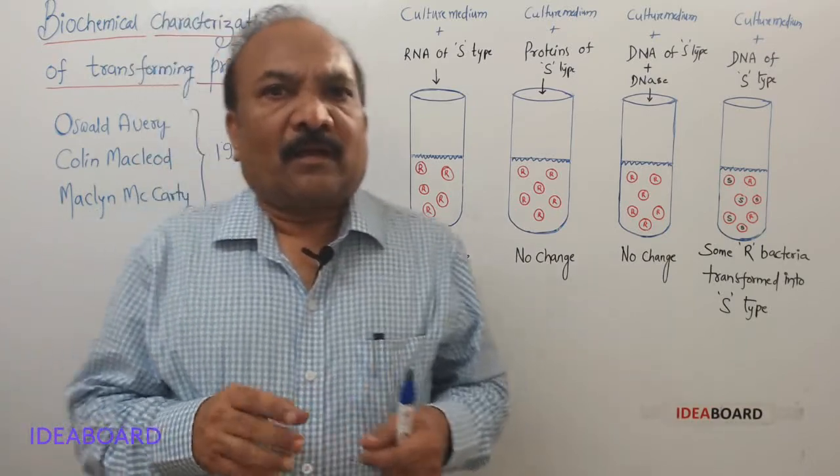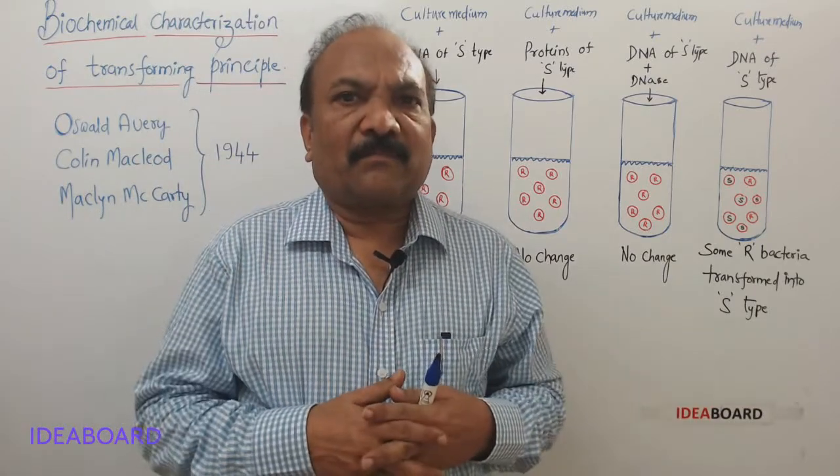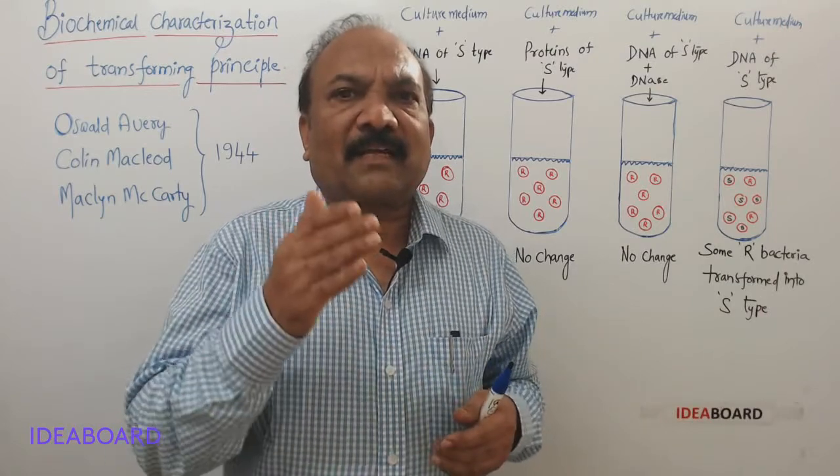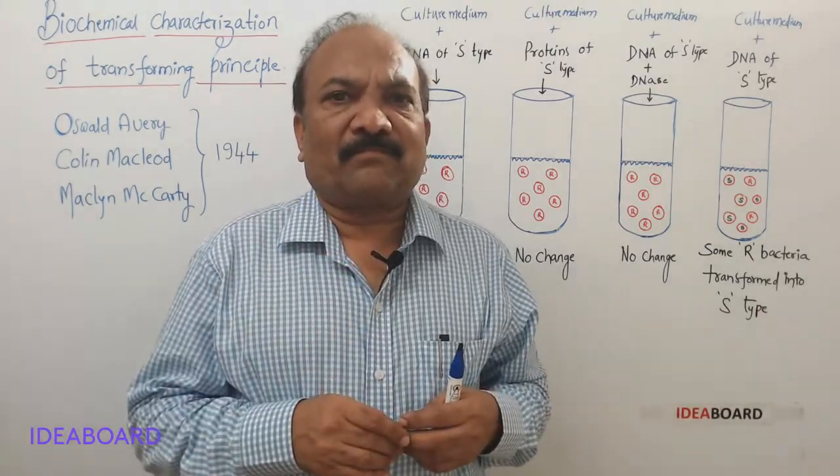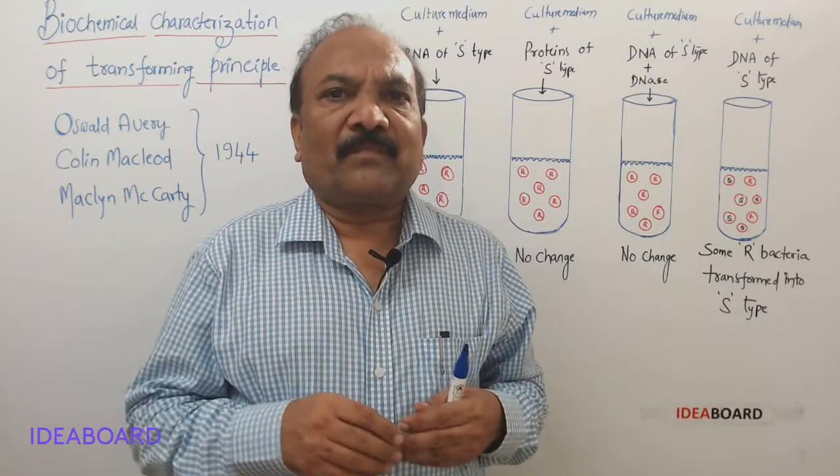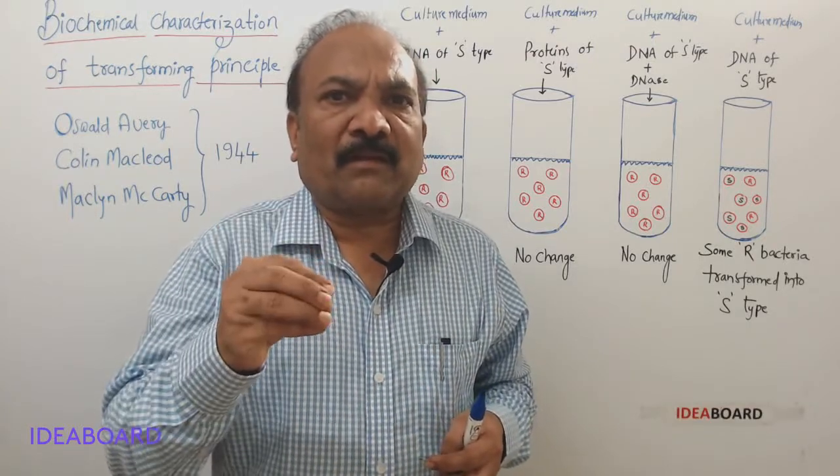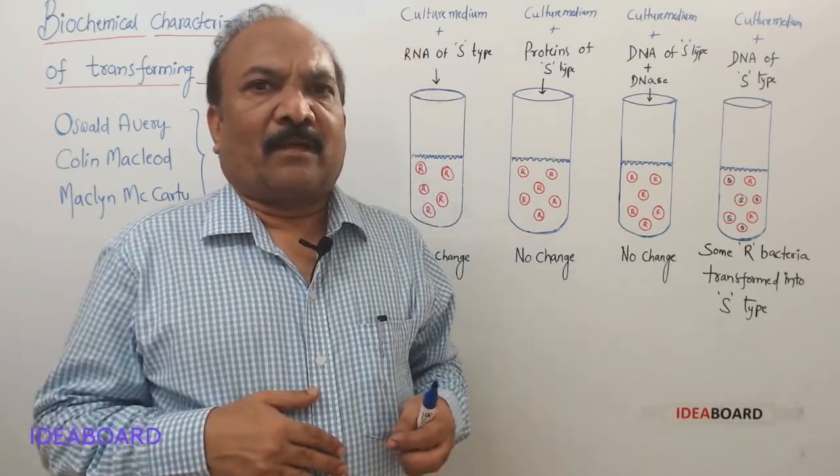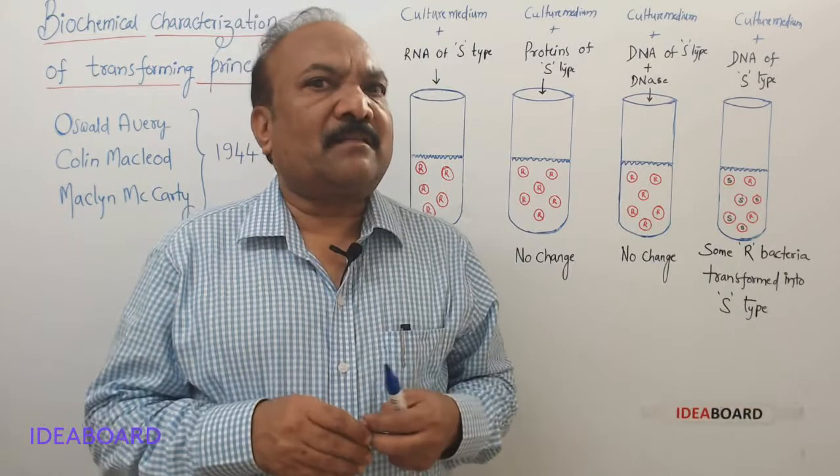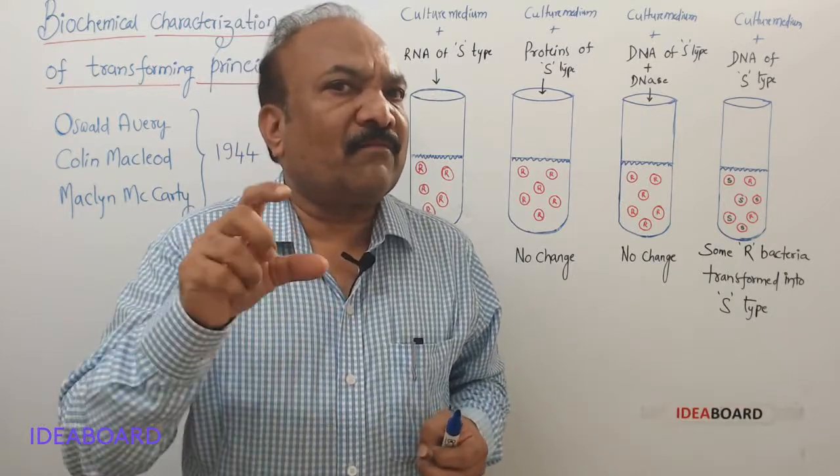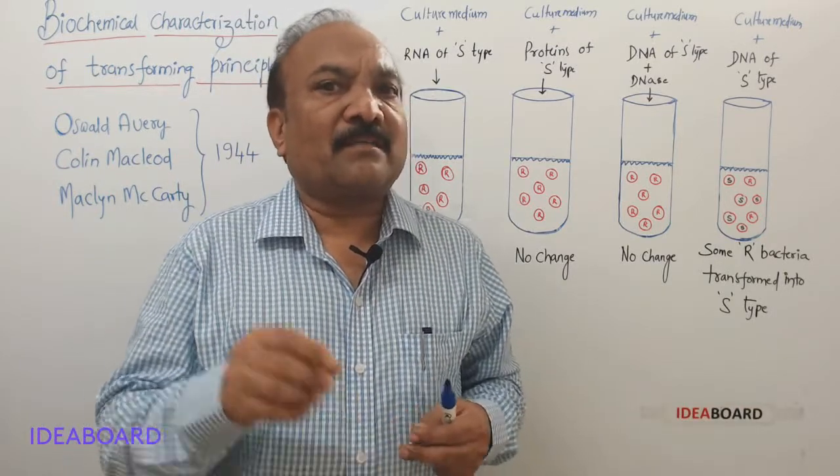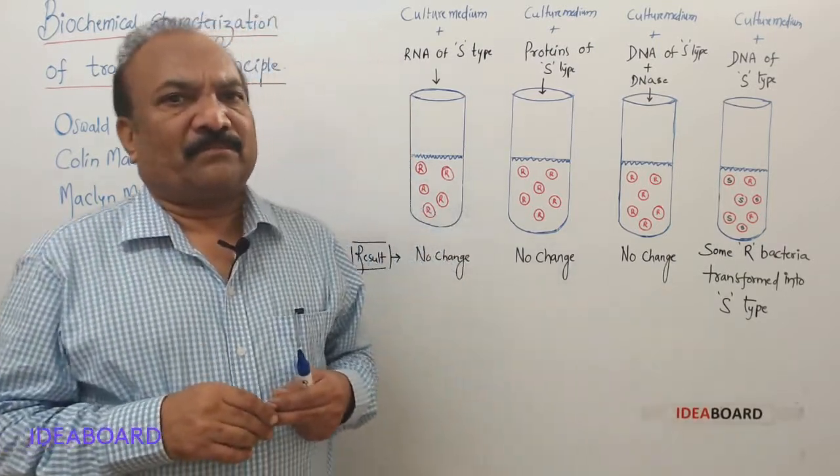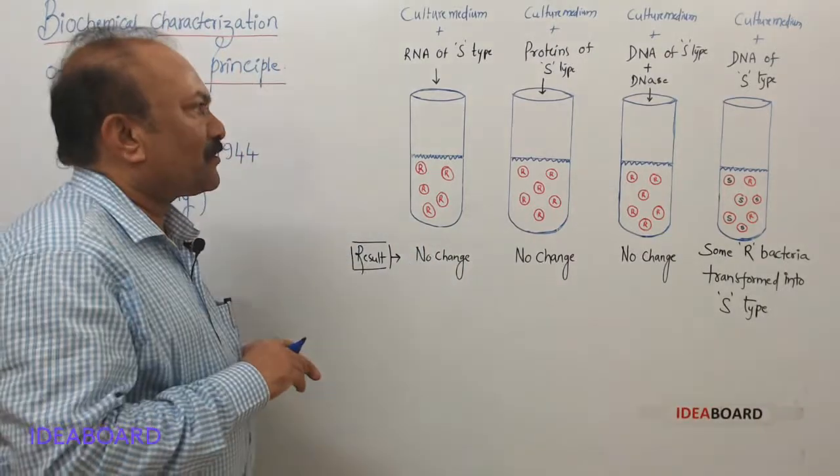He has not given any chemical nature for that transforming principle. Then onwards, many biochemists started guessing this transforming principle, and most of them thought that this transforming principle could be a protein. The experiments conducted by Frederick Griffith are in vivo experiments because he has used mice in his experiments.